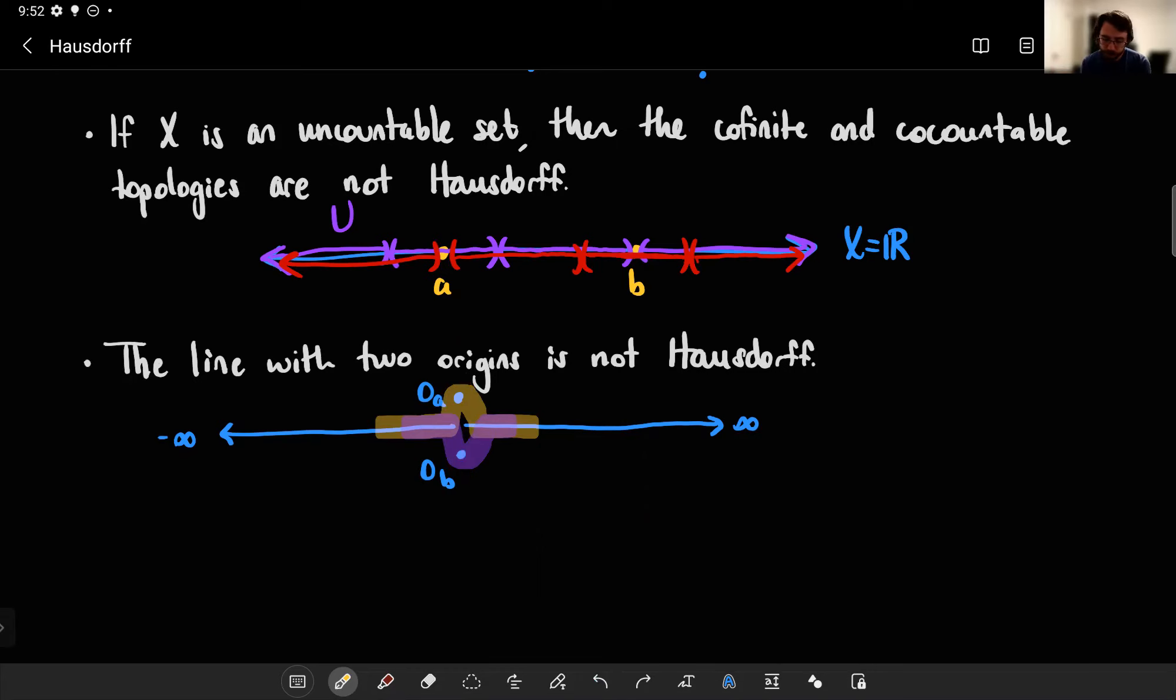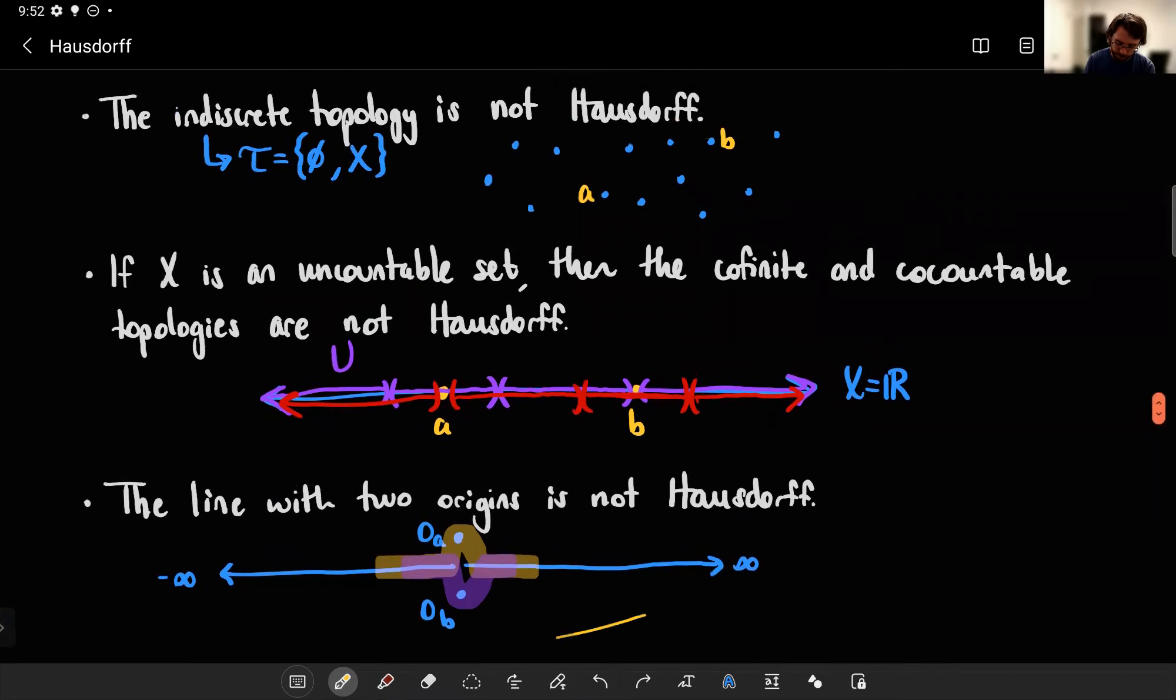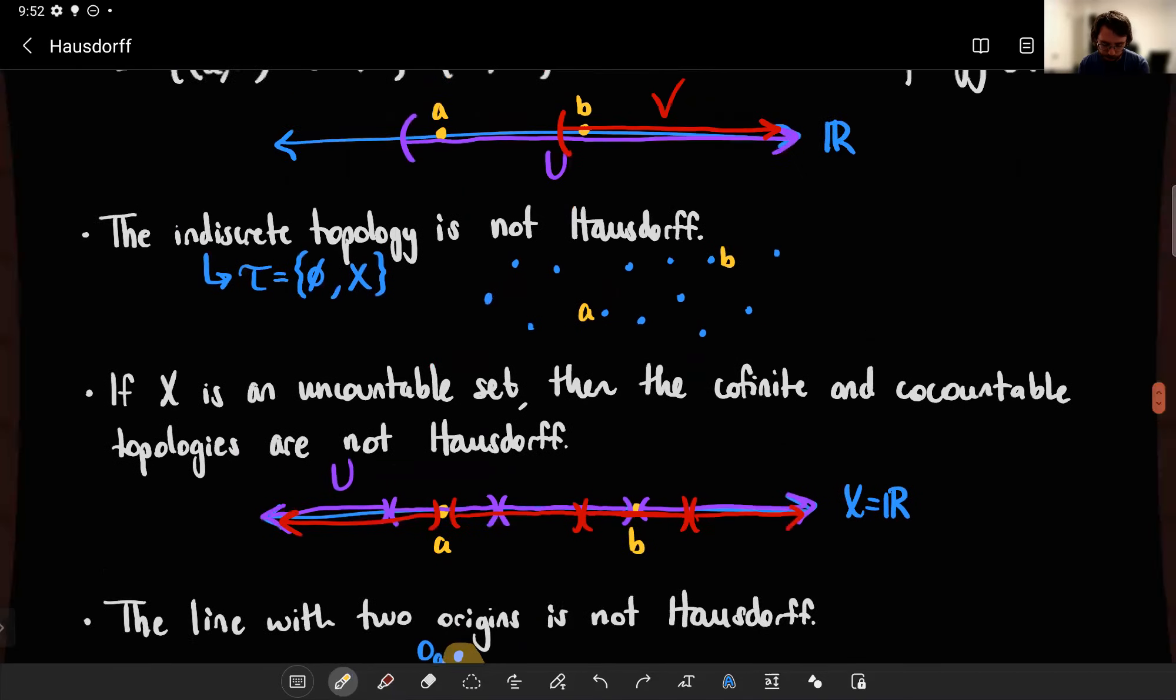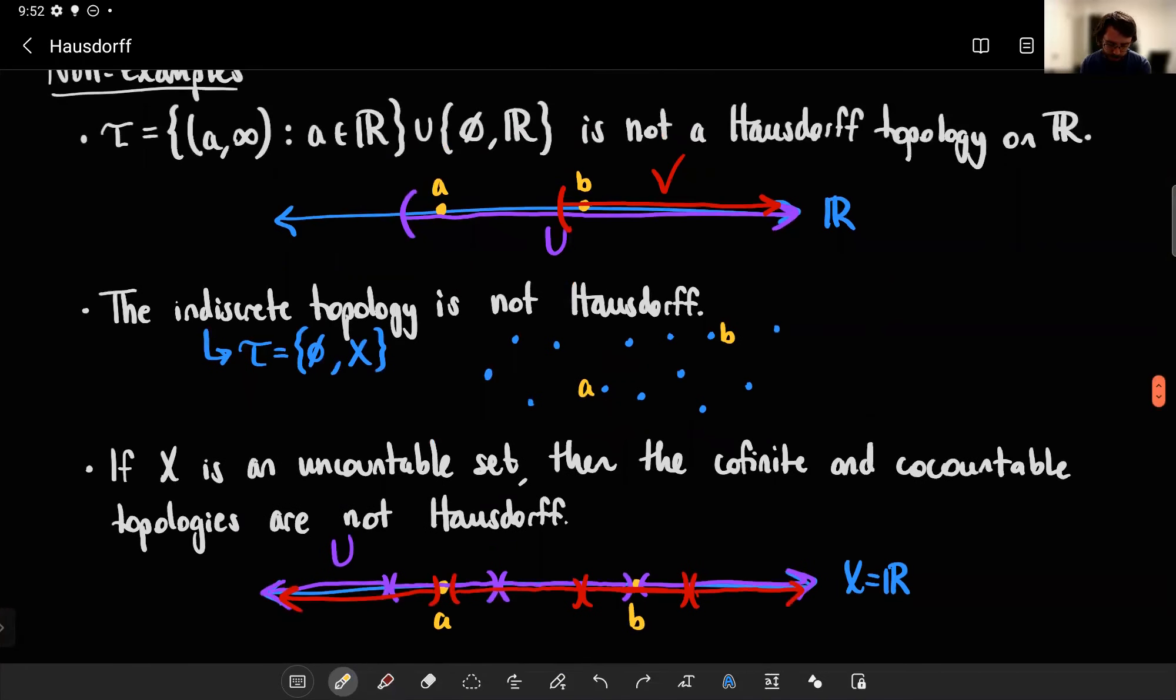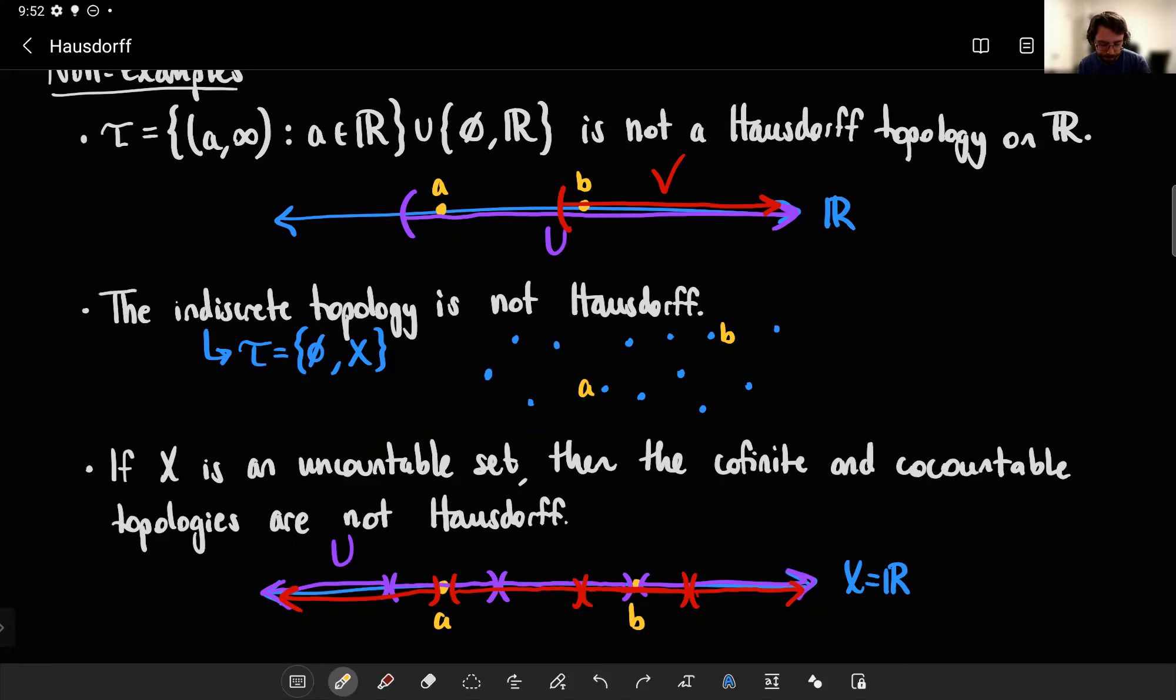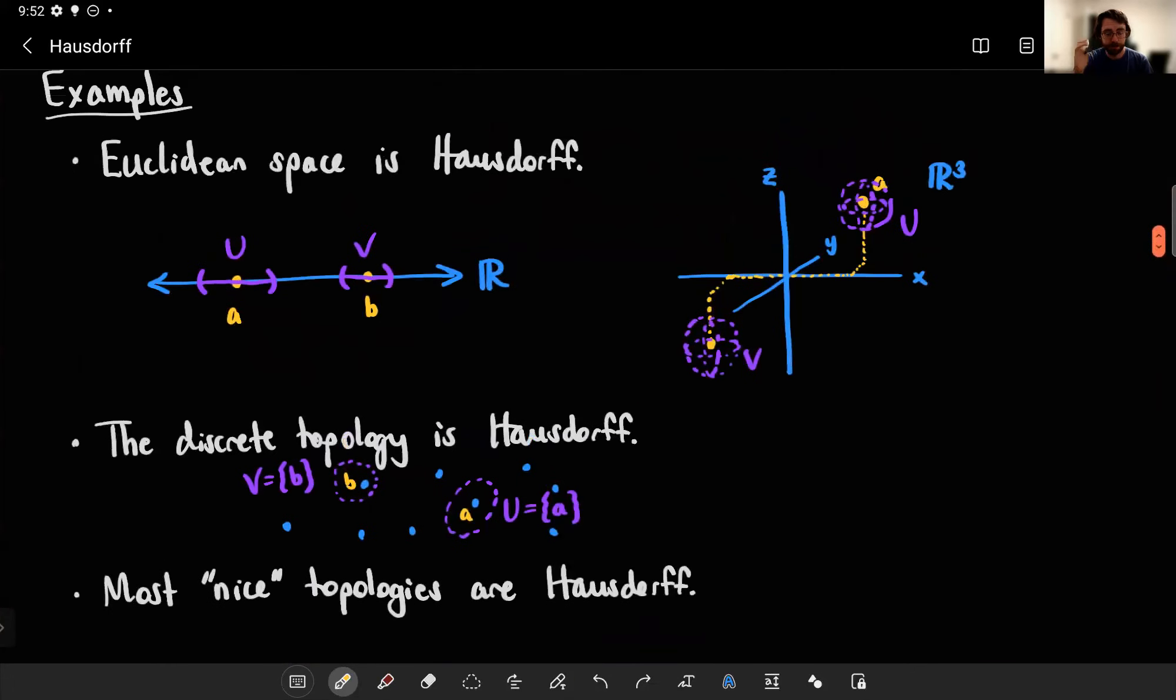All right. So most of the time, we won't be dealing with spaces like that. I mean, manifolds are defined so that you specifically avoid that case and you avoid something called the long line. Yeah, we like Hausdorff spaces. The indiscrete topology is real ugly. Co-finite and co-countable are pretty ugly. So yeah, most nice spaces will end up being Hausdorff. Thanks for watching.